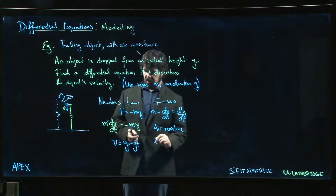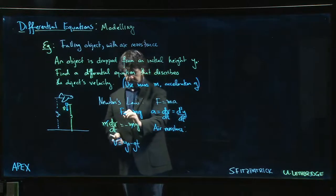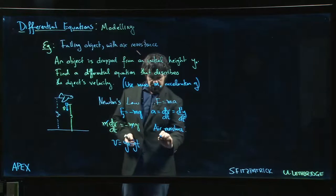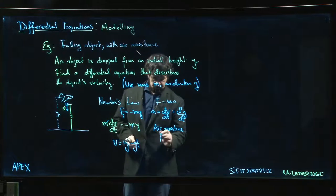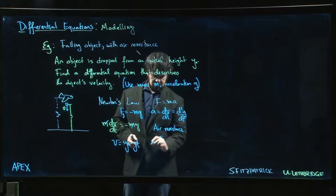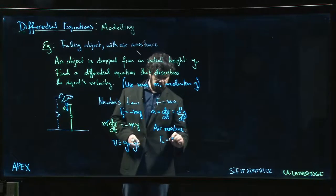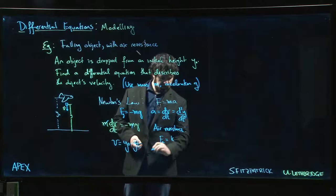We can call this the force due to gravity, and now we have a force due to the air, let's call it Fa, which is going to be some constant k times velocity.